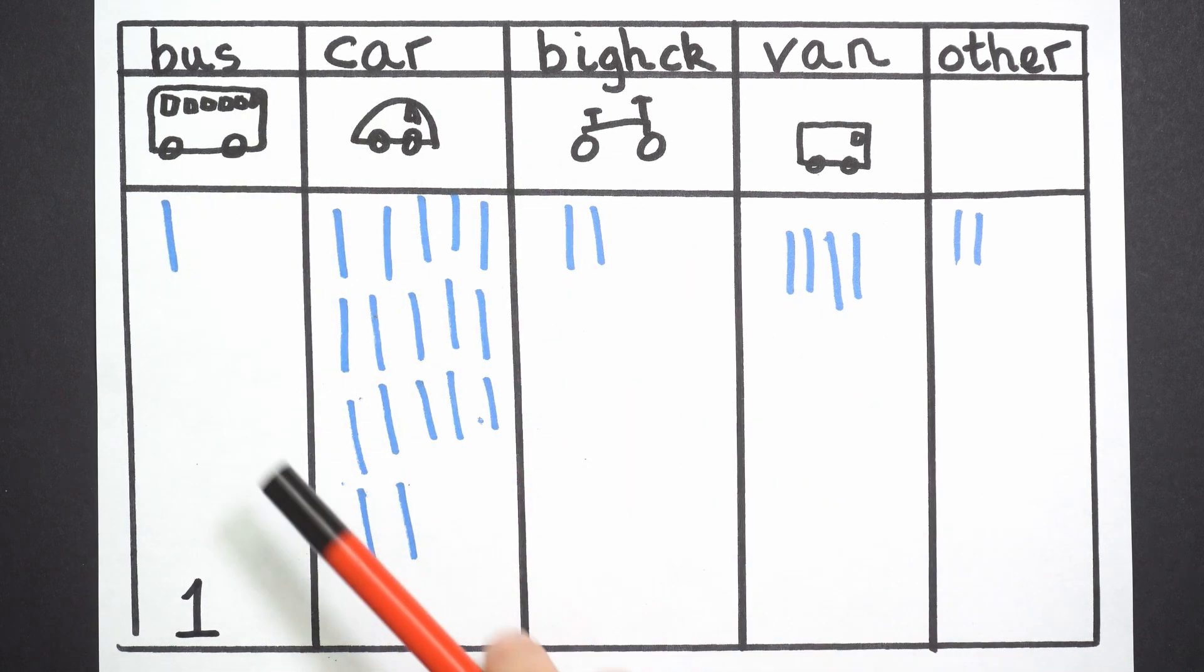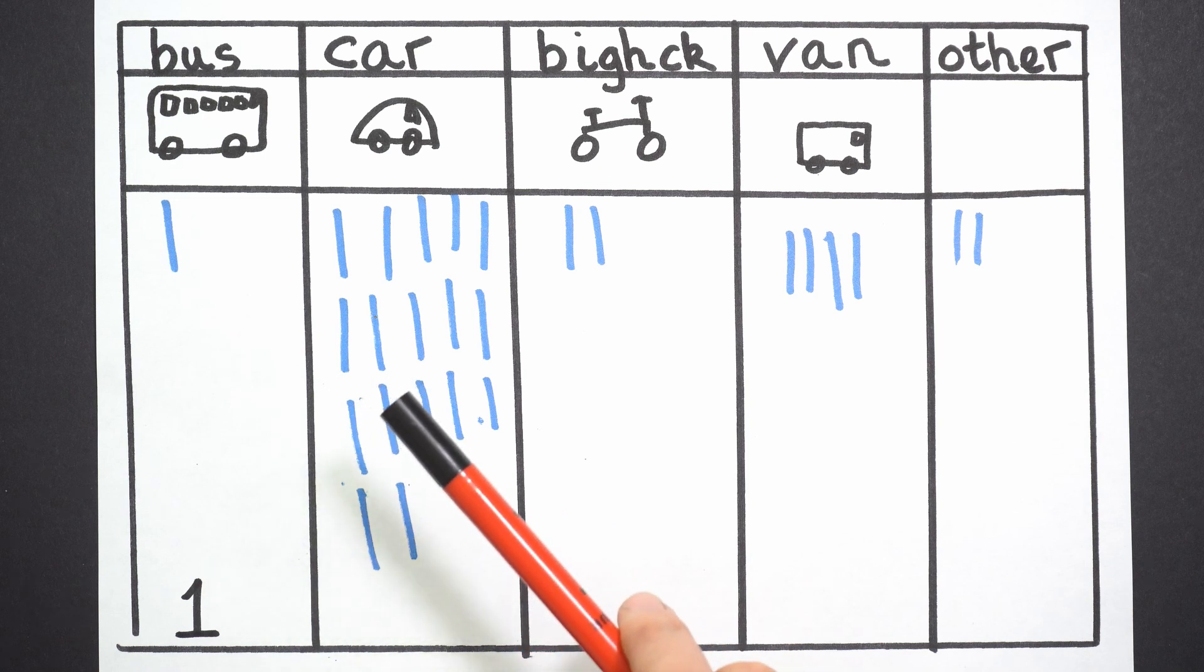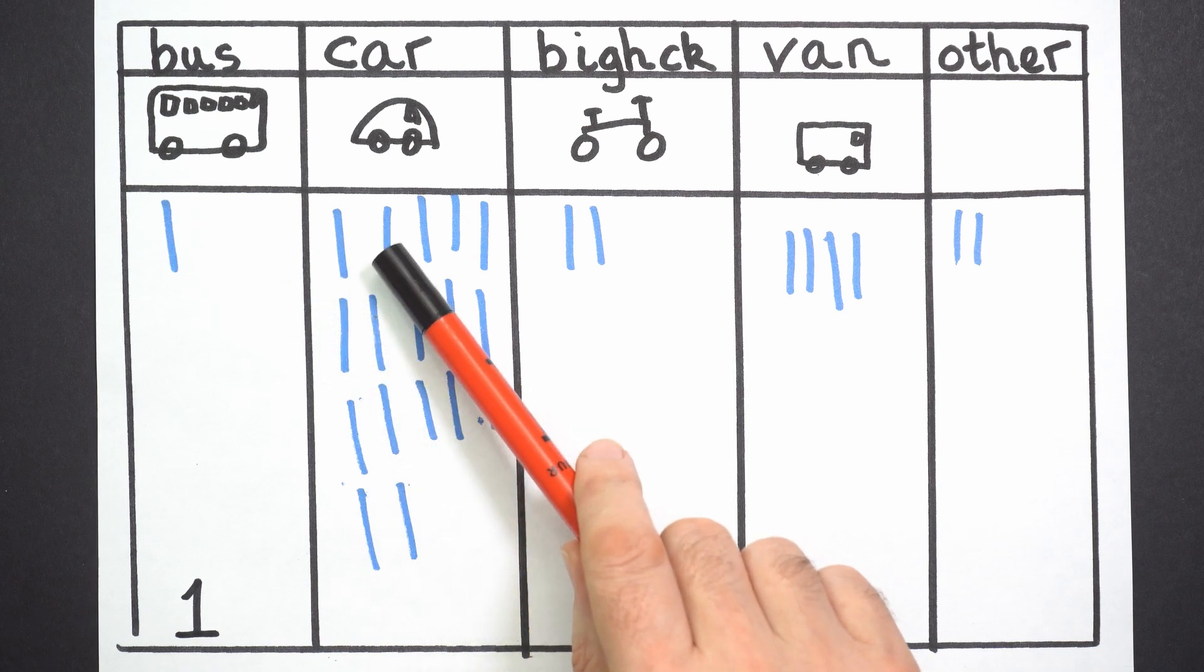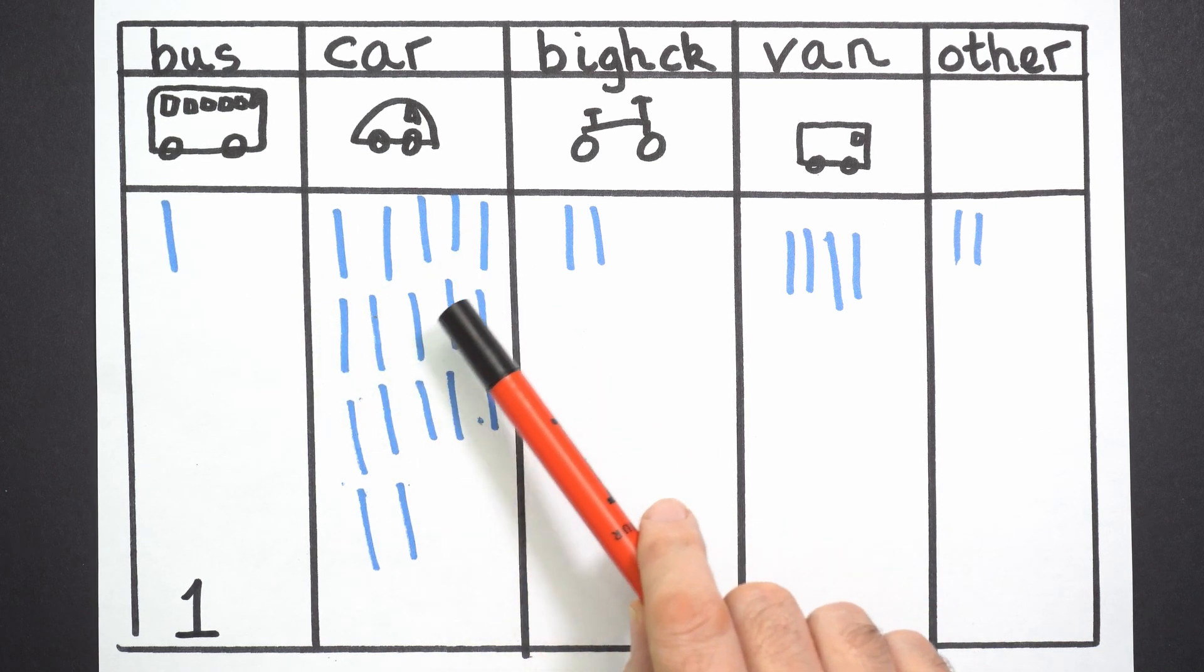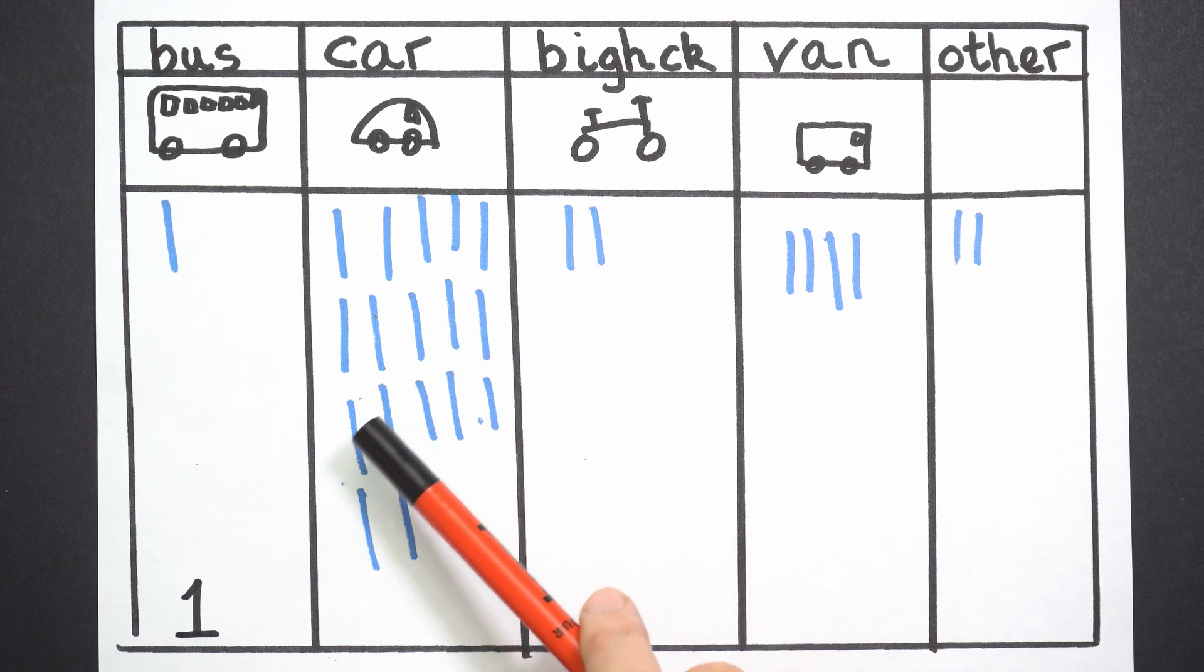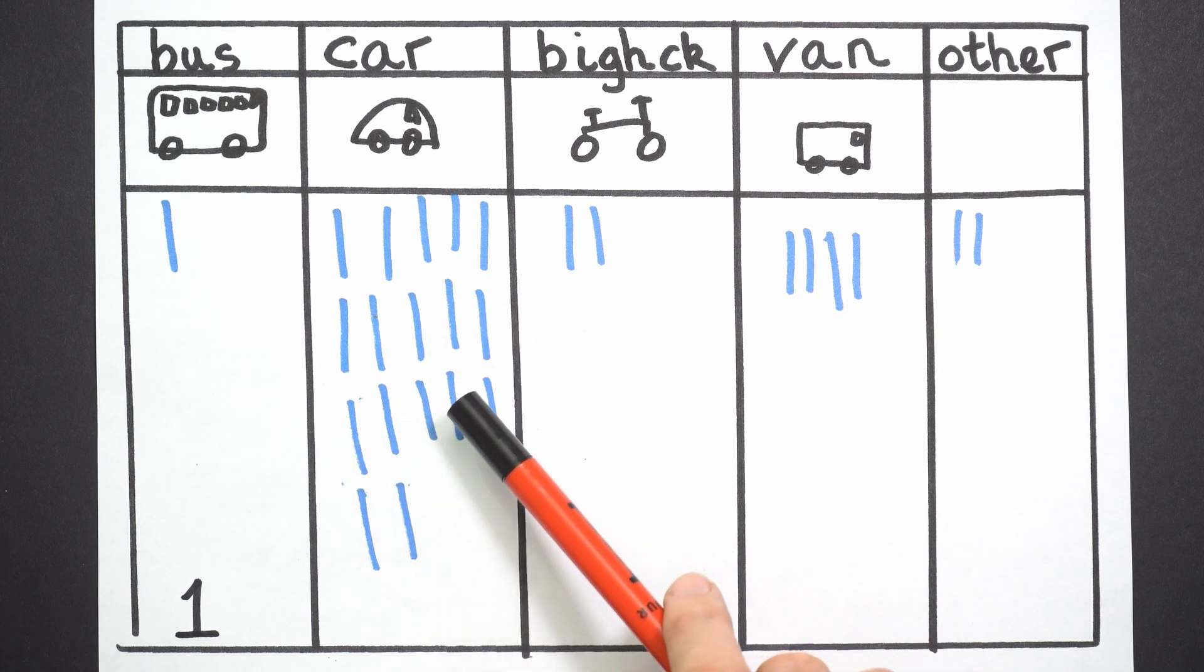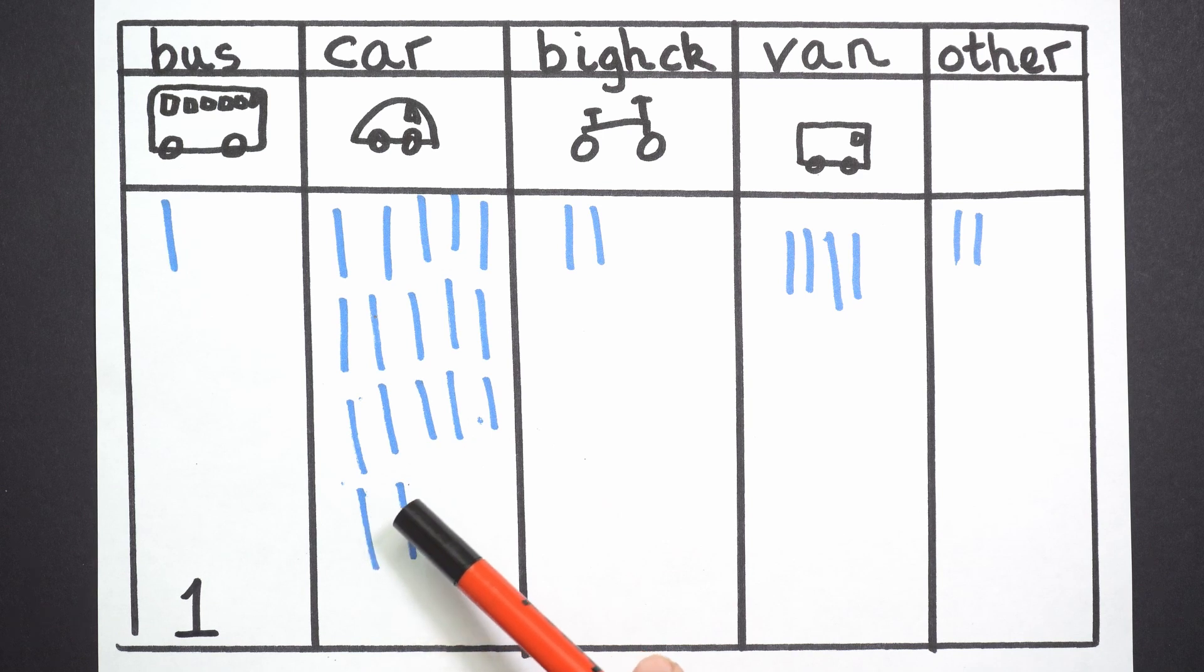Wow, how many cars were there? Do you count them with me? I'm going to do it systematically, working from the top to the bottom. One, two, three, four, five, six, seven, eight, nine, ten, eleven, twelve, thirteen, fourteen, fifteen, sixteen, seventeen. That's a lot.